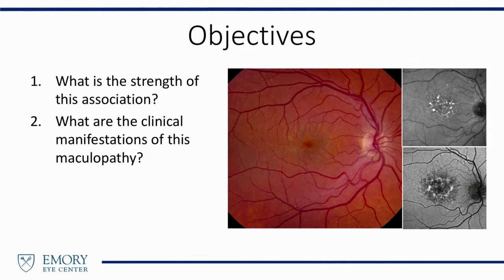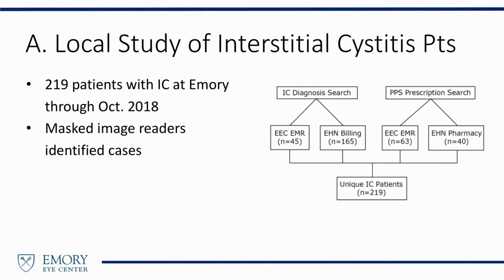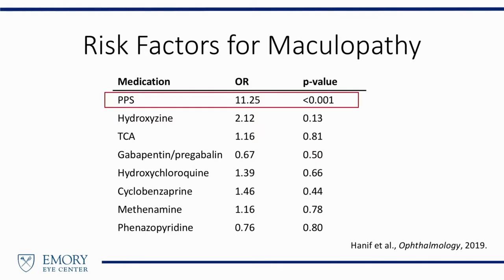And then I'll go over some clinical features of this maculopathy. So first, we searched our local database for patients with a history of interstitial cystitis. We looked at a number of databases to have a pretty comprehensive look at these patients, and we found 219. Then we had masked image graders review fundus imaging on these patients and determine whether or not they had this unique maculopathy. We explored the risk factors, including medications and demographic variables. This is what we found: exposure to pentosan polysulfate was the only variable significantly associated with increased odds of having this unique maculopathy.